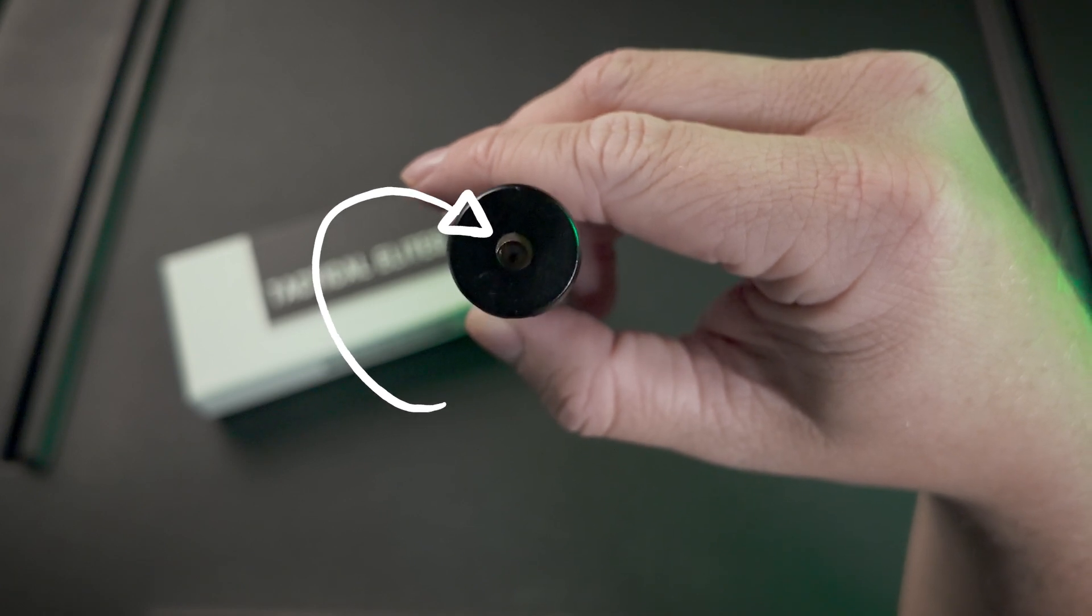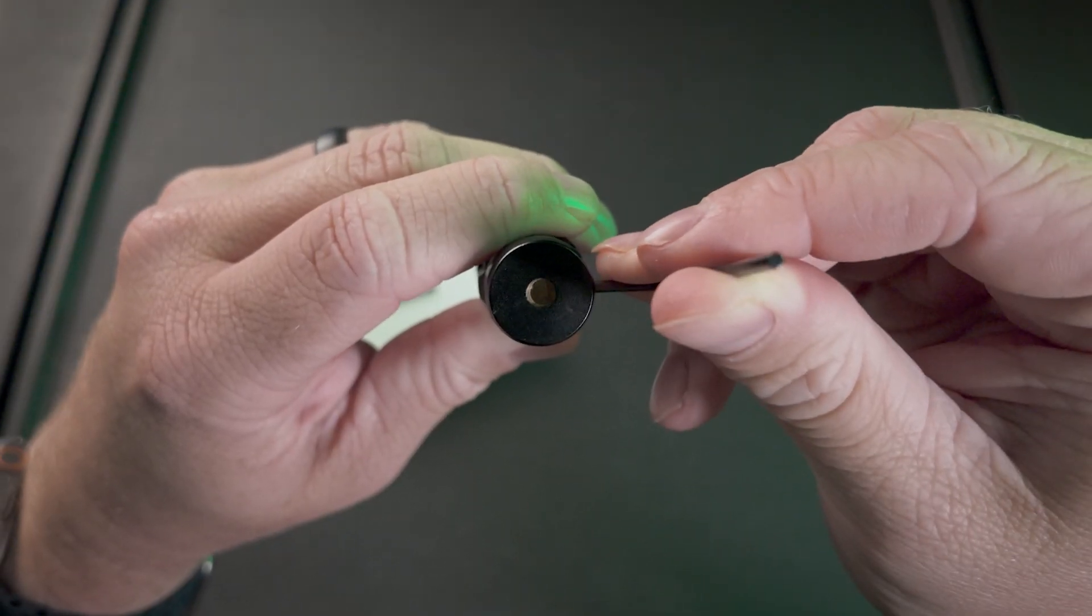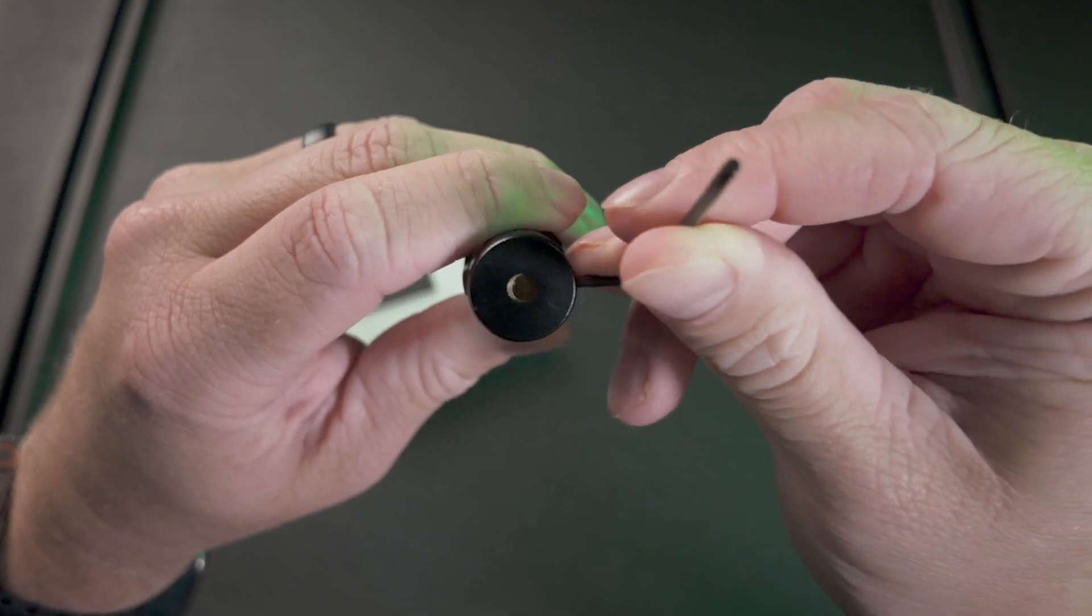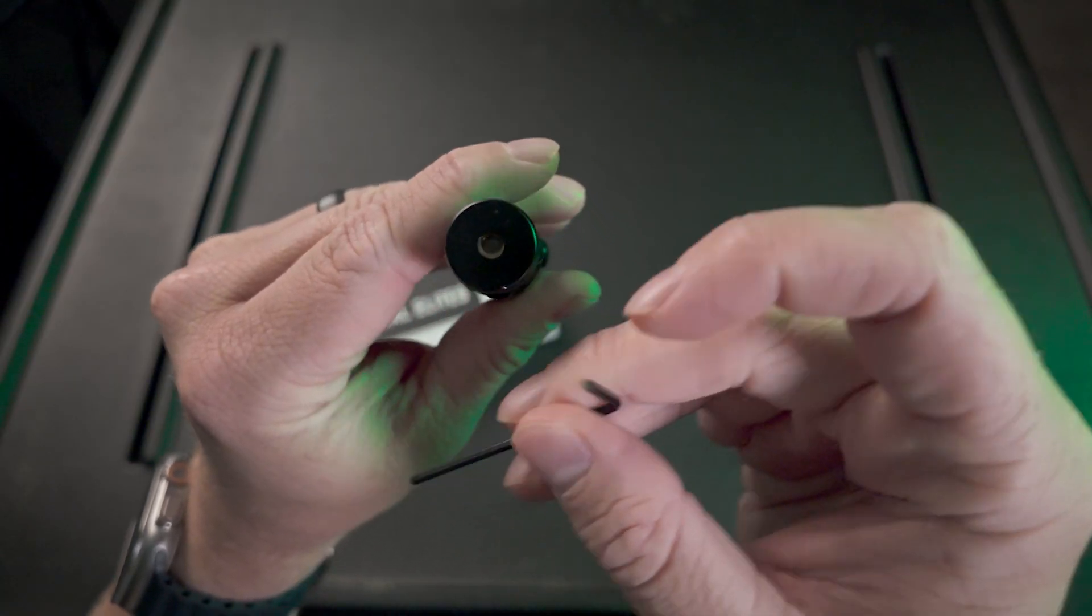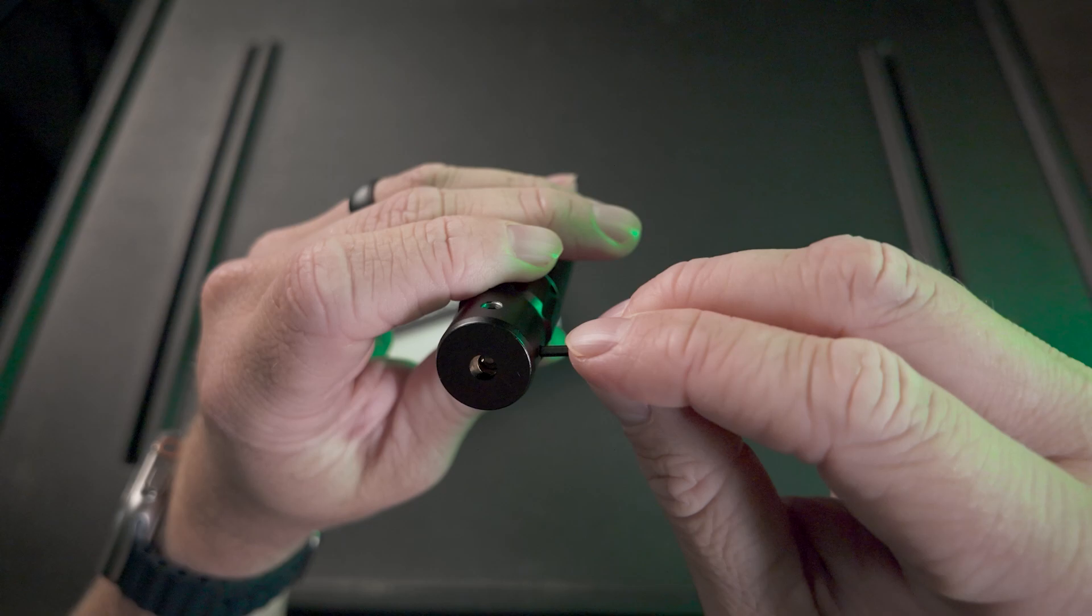If it looks slightly to the right or left, use the Allen wrench to tighten and loosen the screws in the direction you want it to go. If it needs to go to the left, loosen the screw on the left and tighten it on the right to push it in that direction.